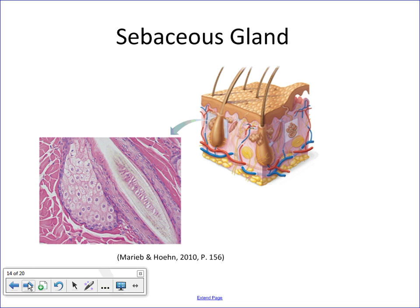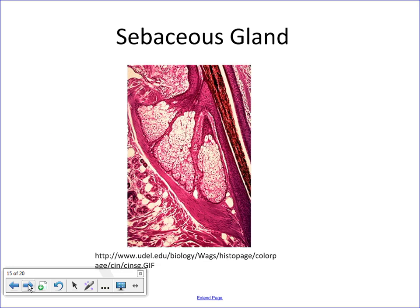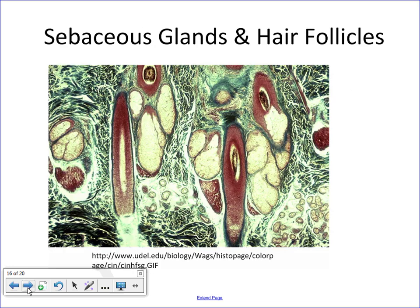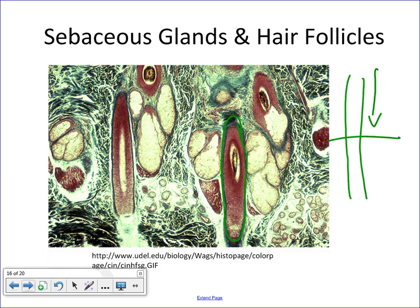Looking at images of sebaceous glands, you can see the hair and then an involution of the epidermis with active cells within the gland. This is a holocrine gland — the cells themselves break apart and their secretions and other materials travel out of the duct. In a transverse section, you can see the hair and the glands right alongside it. Their secretions are secreted out of ducts and travel up the hair and out onto the surface of the skin.